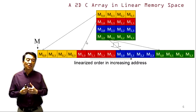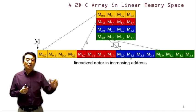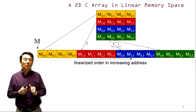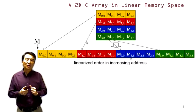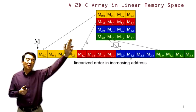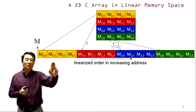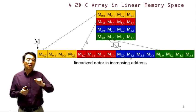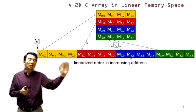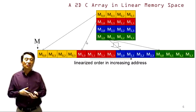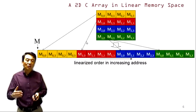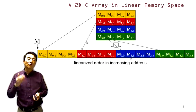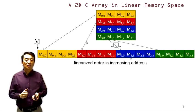Here is a quick review of the row-major layout of matrices in C. The first row is laid out in consecutive locations, the second row in consecutive locations, and so on. This is a quick review of the linearization of two-dimensional arrays in C.